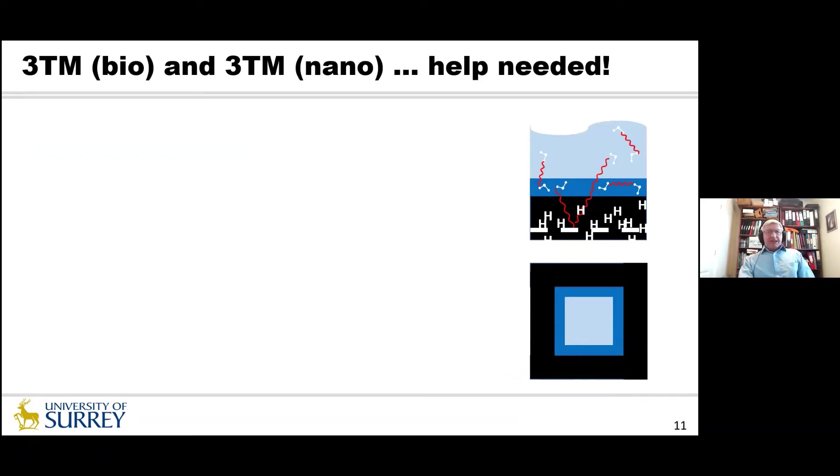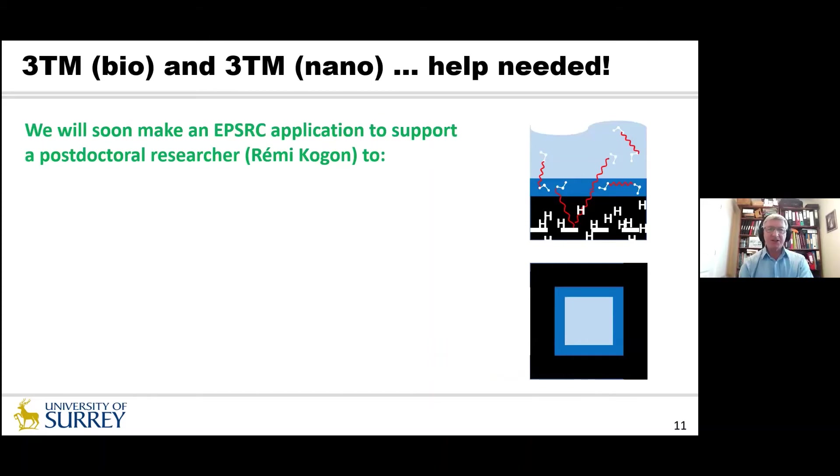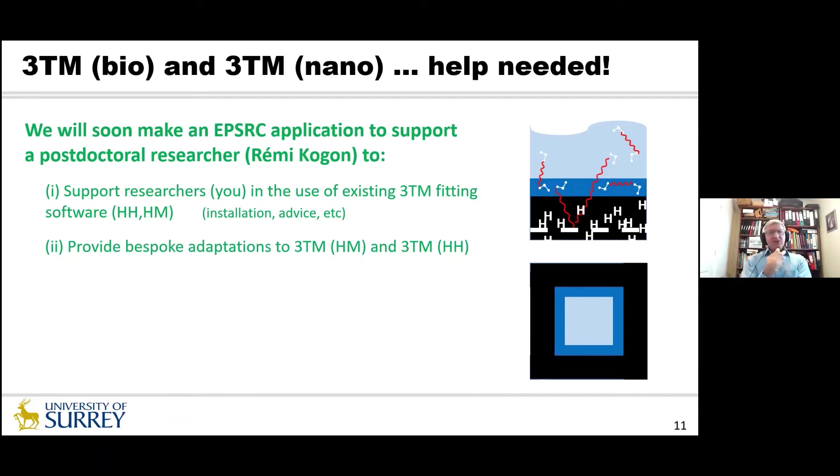But we can only do this if we get funding and our plan over the next month is to make an application to the UK Engineering and Physical Sciences Research Council to support Remy Kogan as a postdoctoral researcher to continue his work with the interface and getting this model out there to you for your use. Our ambition is to do the following as part of that grant application if it were to be successful. First of all, we would be able to support you in the use of the existing software that we'll demonstrate next week. And that concerns the installation and advice in operating the software. There's glitches and all sorts of things can happen. And then when you're trying to use it, you may need help and advice. And we want to provide that service to you as part of a successful grant application.